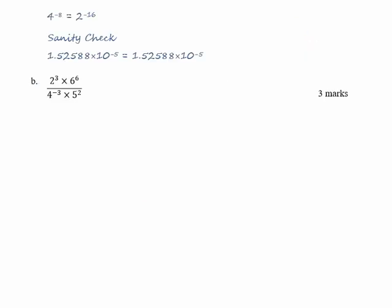Part B. In this expression we've got numbers to different bases. Because we need prime numbers, let's rewrite this expression replacing six with two times three and replacing four with two times two.